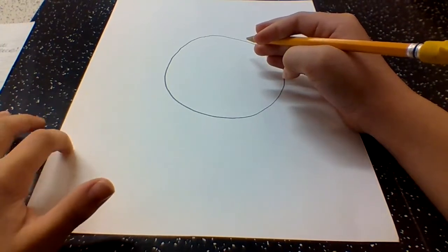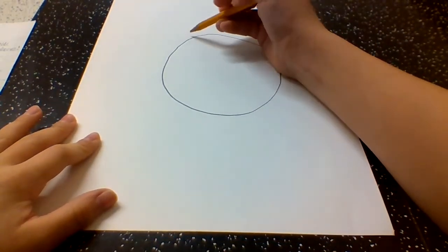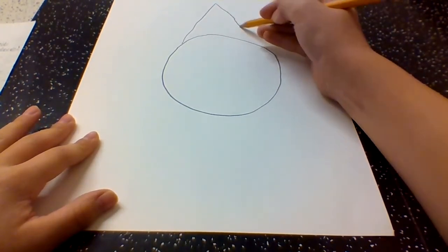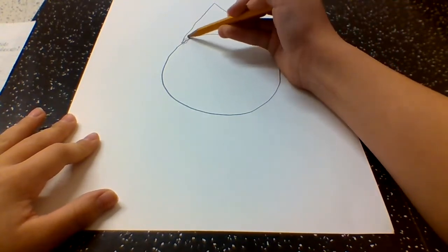Then draw a triangle on the top of your big circle. Now scribble on the bottom of your triangle.